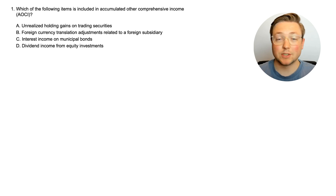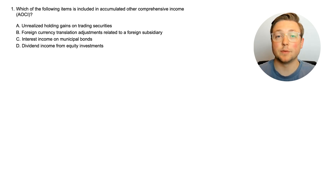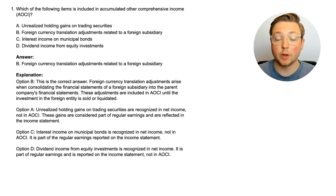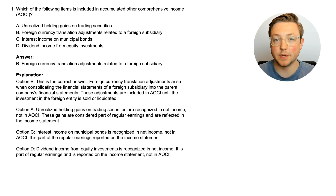If you don't know, that's okay. The idea behind the SuperfastCPA strategy is using the questions to learn how to do it. Let's dive straight into the answer to start learning. The answer is B: foreign currency translation adjustments related to a foreign subsidiary.